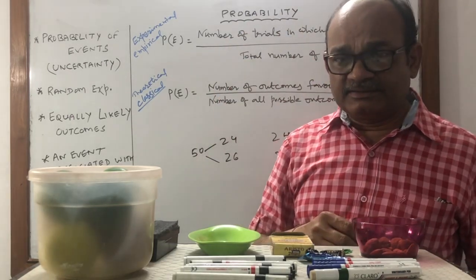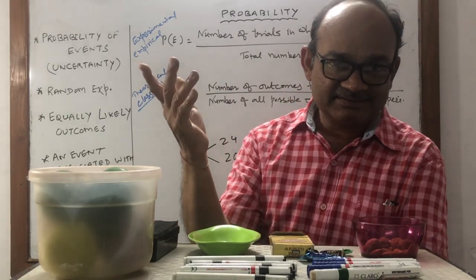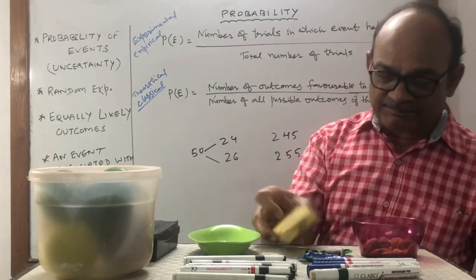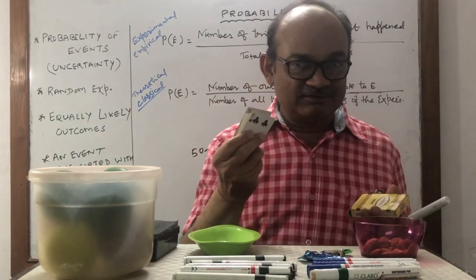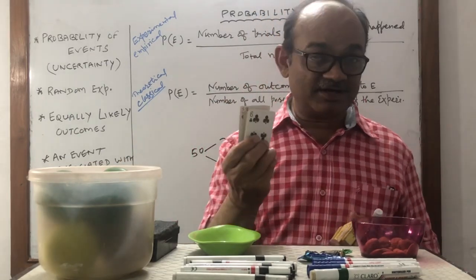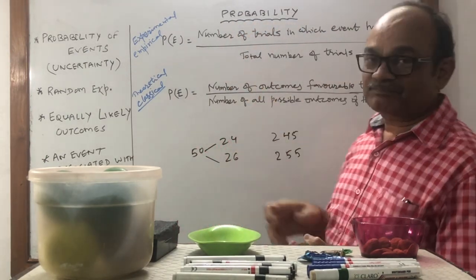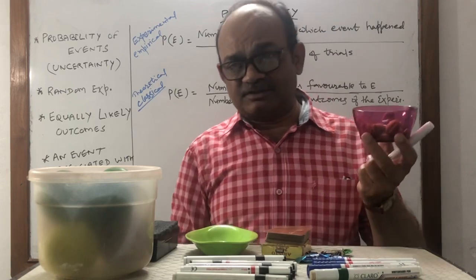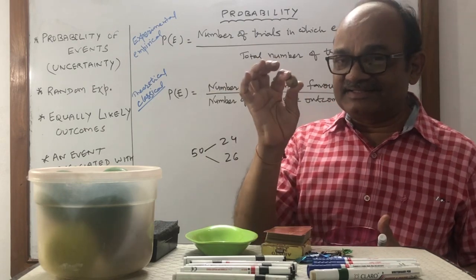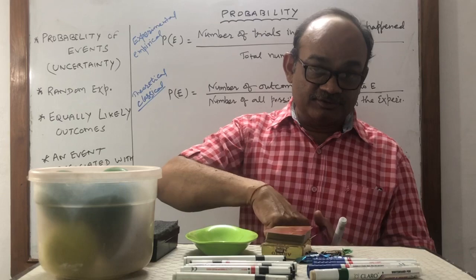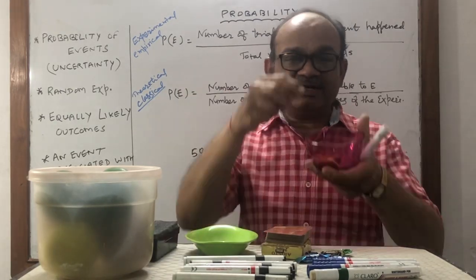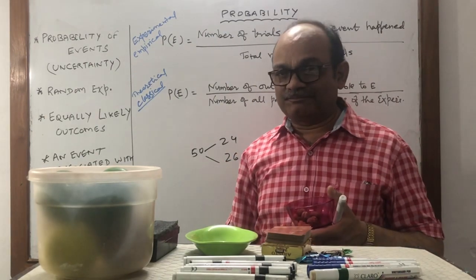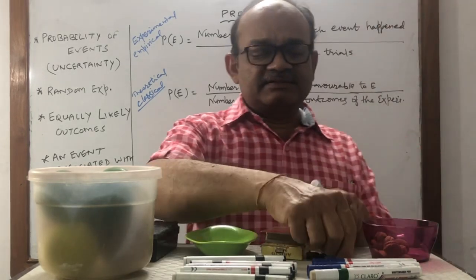For example, if you throw a dice, total number of outcomes are 1, 2, 3, 4, 5, 6. If you want 6, one choice is favorable — answer is 1 by 6. If you have a pack of 52 cards and want to select a king, favorable are 4 kings but total cards are 52, so probability is 4 by 52. Suppose you have a bowl with 10 almonds and 5 apricots and you want an apricot — favorable are 5, total items 15, so probability is 5 by 15.